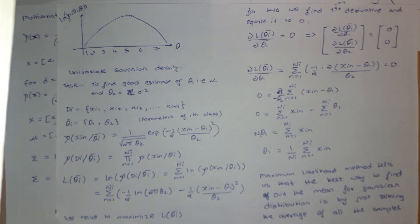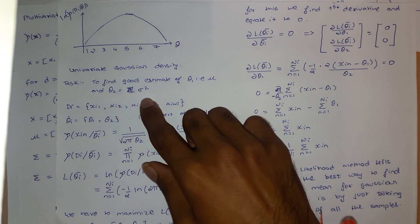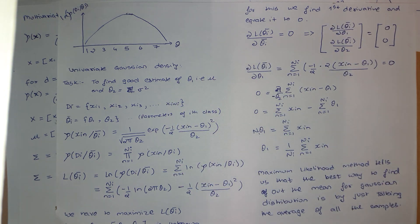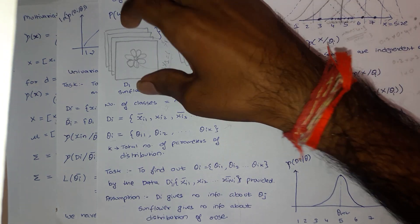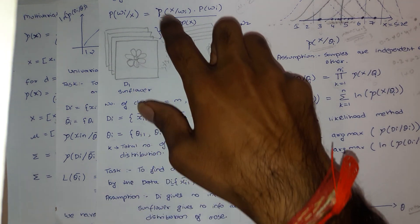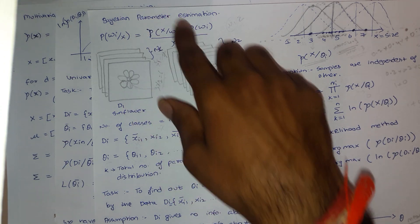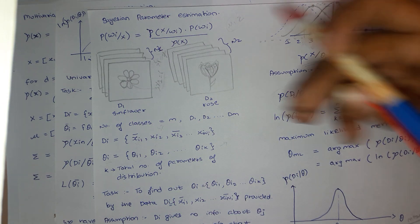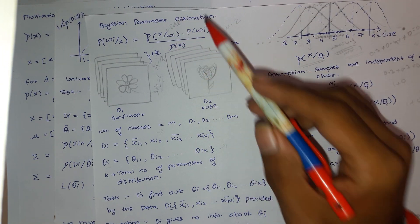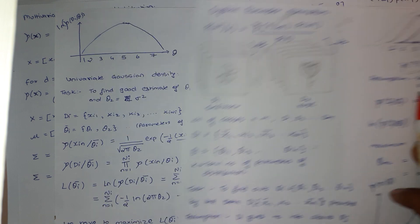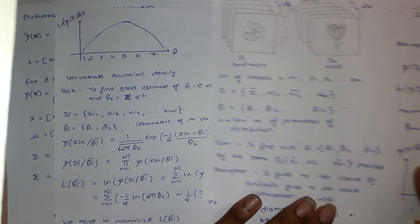For the univariate Gaussian density, there are only two parameters: mu (the mean) and sigma squared (the variance). We just have the data, and from the data we are going to estimate the likelihood — that is, estimate the PDF. To estimate this PDF we only need the parameters, because if we have the parameters we can plug them into the formula and get the PDF.